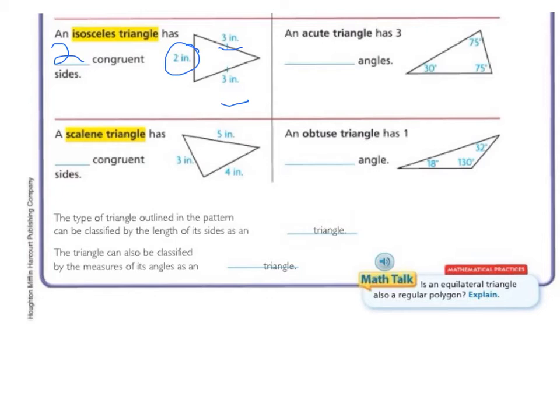An acute triangle has three acute angles. So if you look at all of these angles, we know that they're acute and they are all less than 90 degrees. Which you should remember, I hope, from 4th grade. So acute is less than 90 degrees. Take a minute and write both of these in your notebook.